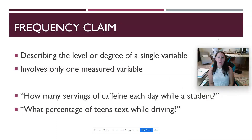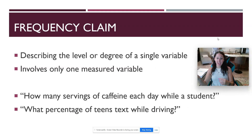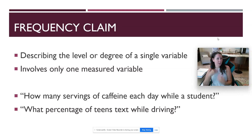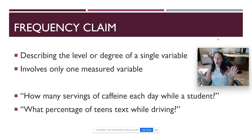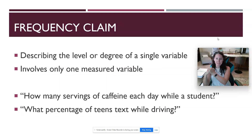A frequency claim is where all we're doing is describing the level or degree of a single variable. We're not saying it's related to anything. We're not trying to say what caused it. As the researcher, I'm not manipulating it, changing it, controlling it, or dividing people into groups. All I'm doing is documenting the level or degree of a single variable. If you remember our last set of videos, you'll remember the term measured variables versus manipulated variables.